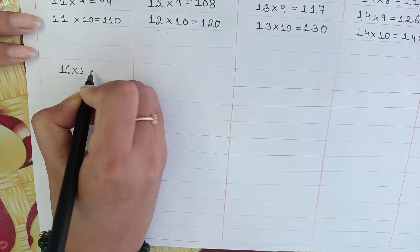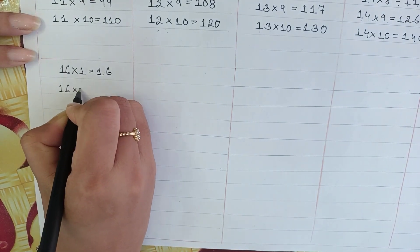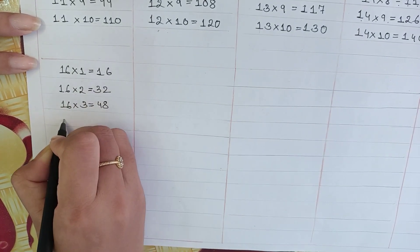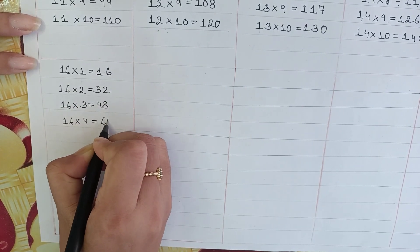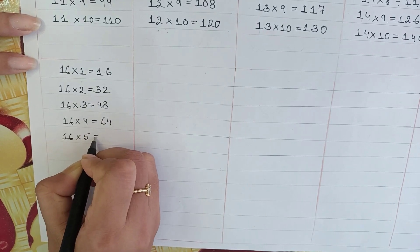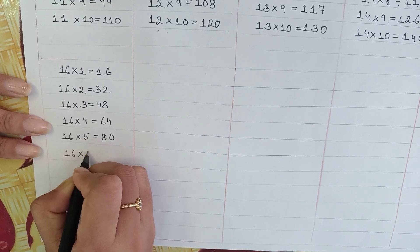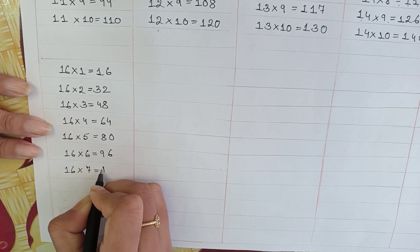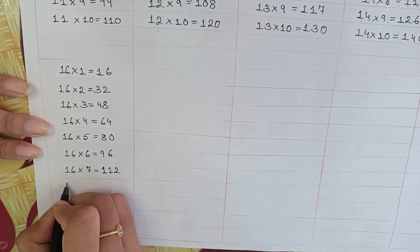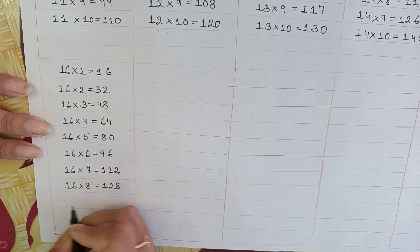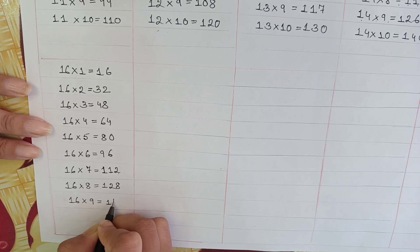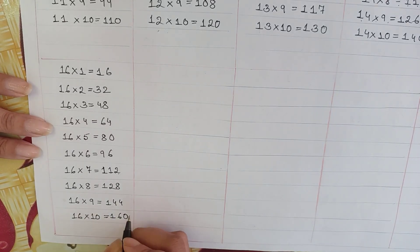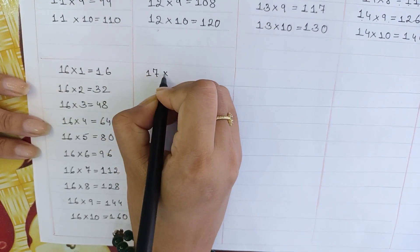Next: 16 table. 16 into 1 is equal to 16. 16 into 2 is equal to 32. 16 into 3 is equal to 48. 16 into 4 is equal to 64. 16 into 5 is equal to 80. 16 into 6 is equal to 96. 16 into 7 is equal to 112. 16 into 10 is equal to 160.